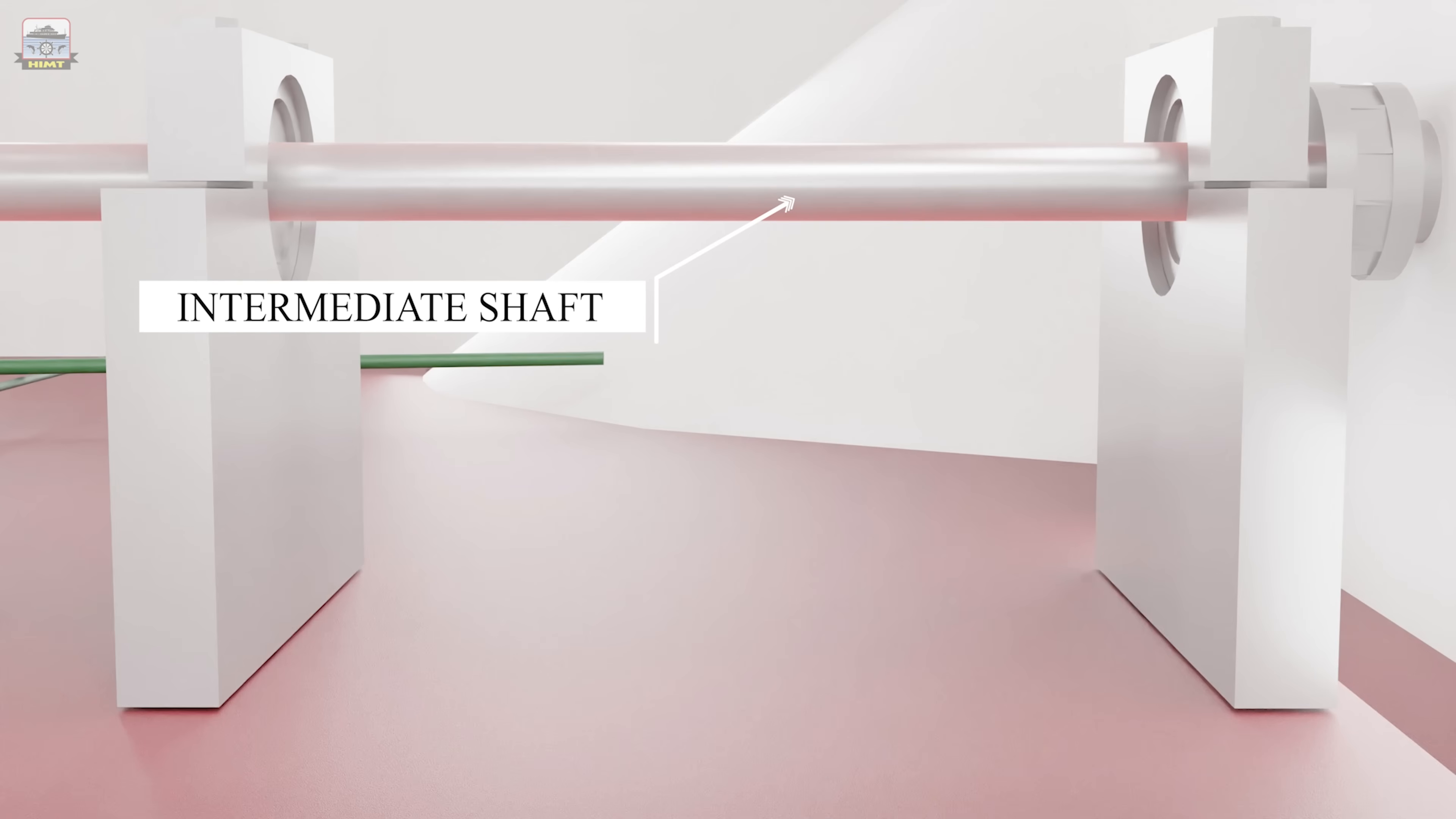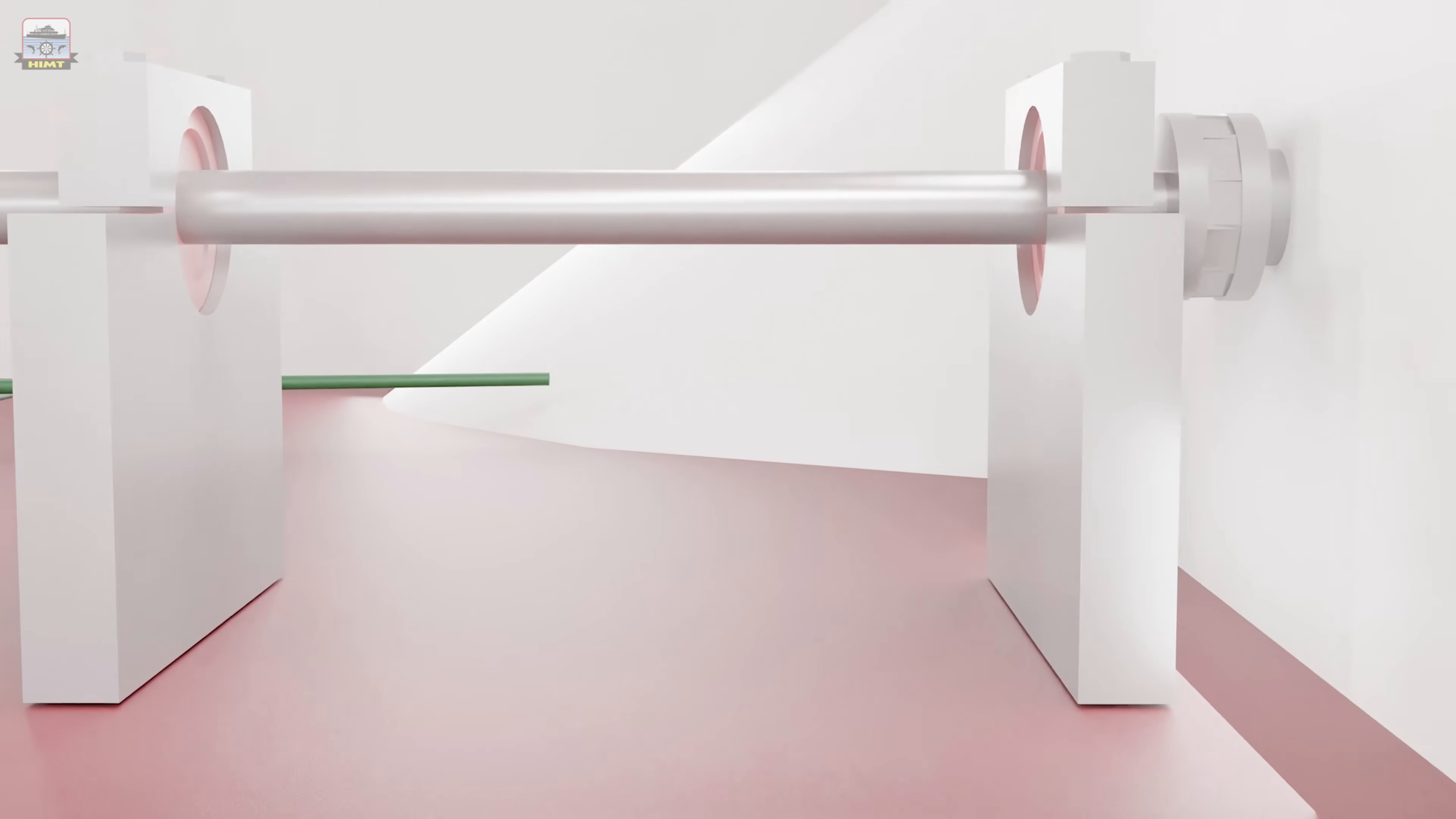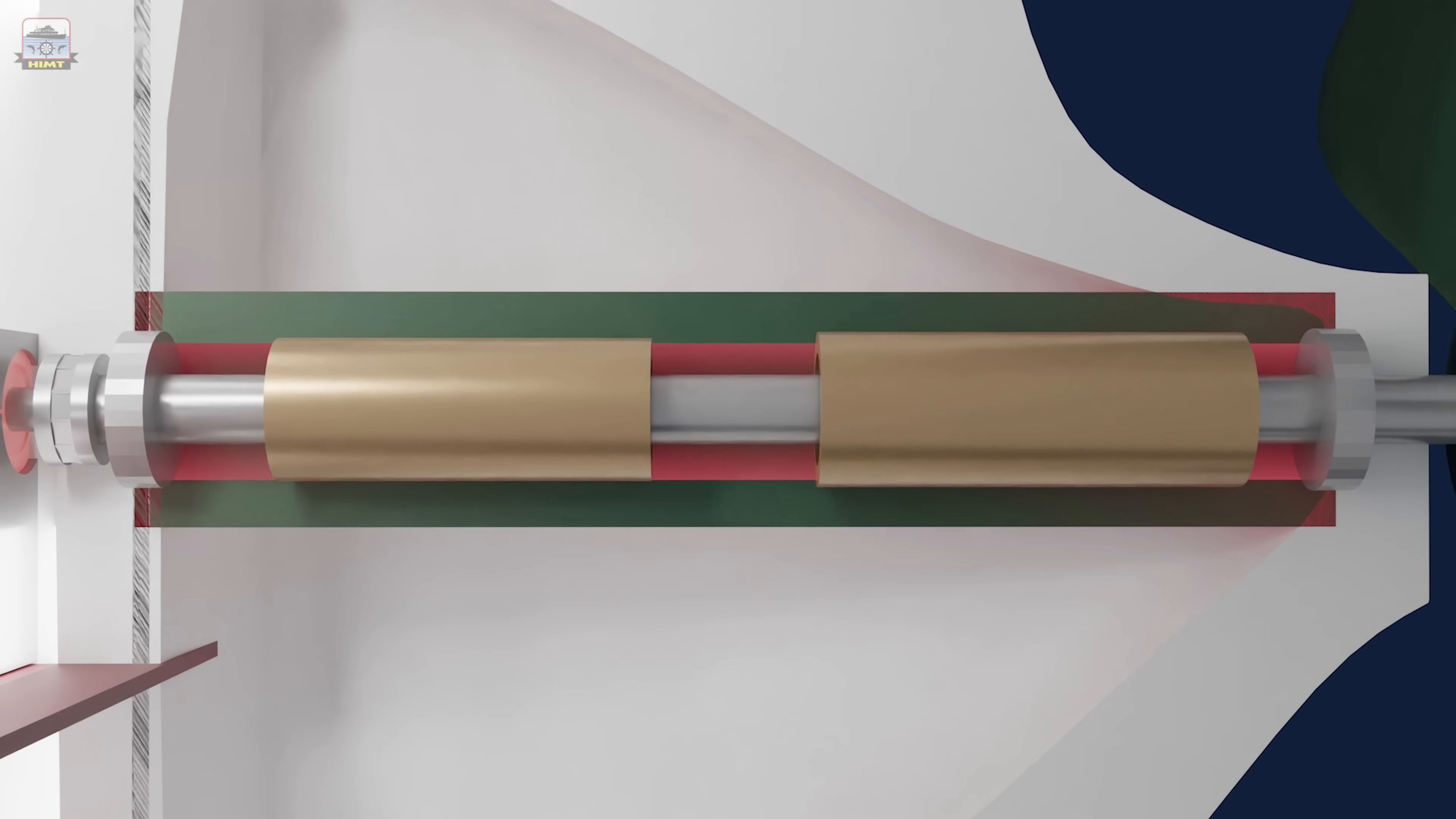Intermediate shaft links the propeller shaft to the thrust shaft. Intermediate shaft bearings support the intermediate shaft. The tail shaft which is attached to the intermediate shaft passes through the stern tube which is a hollow tube provided at the lower stern part of the ship.